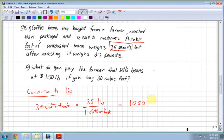So I'm left with 30 times 35 is equal to 1,050. Now that's 1,050 pounds. We're paying $1.50 per pound. So what do you pay the farmer?